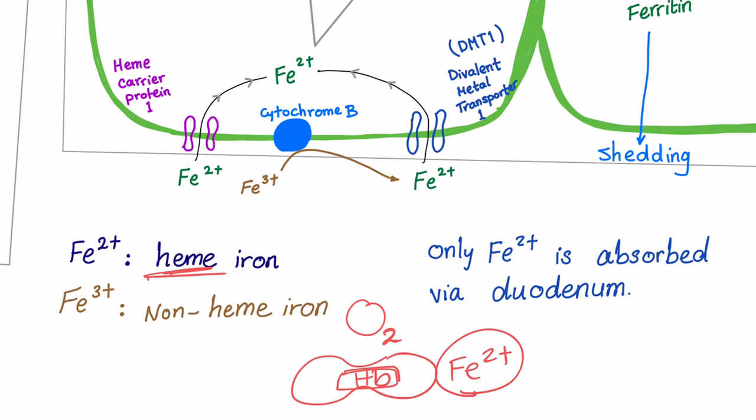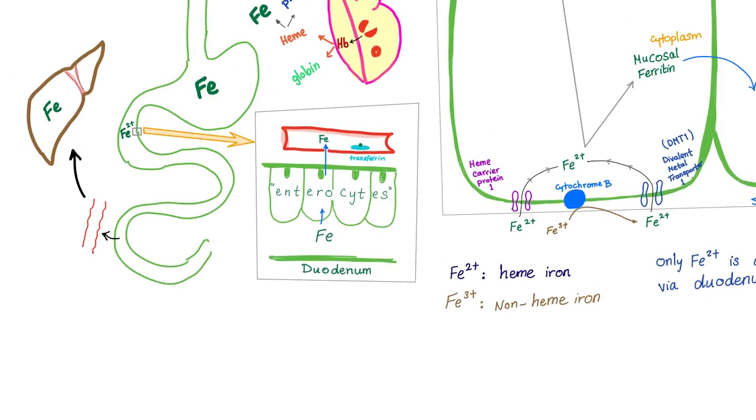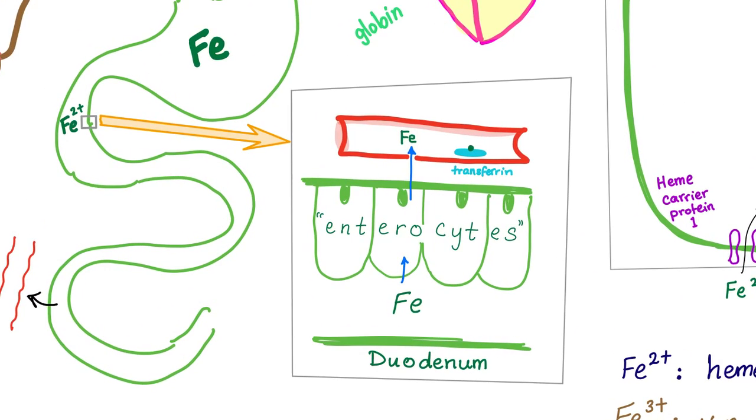There is a mnemonic to remember that: Fe2 carries O2. Fe2 carries O2. The ferrous state, the heme in the hemoglobin carries the oxygen. Fe2 carries O2.